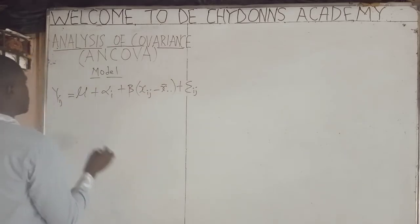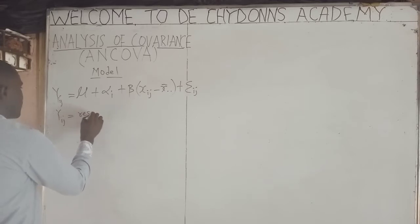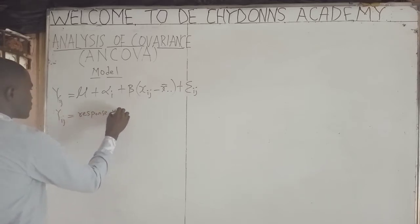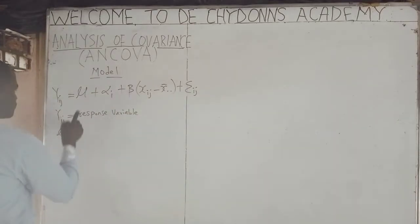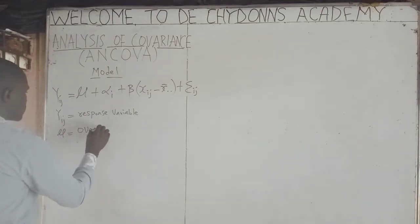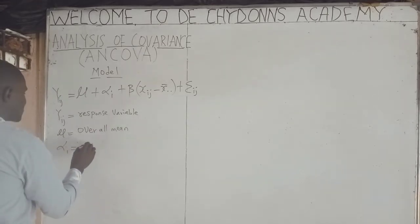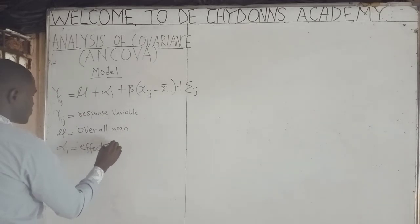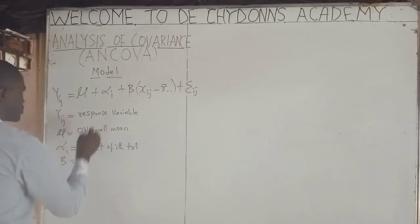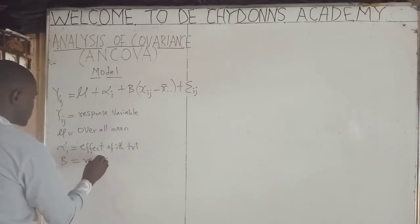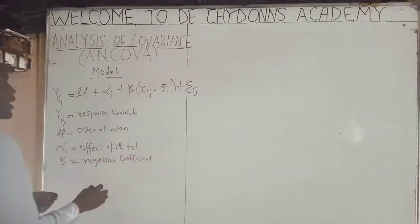In this model, Y-I-J is called the response variable. The overall mean symbol is called the overall mean. The effect of the i-th treatment term is called the effect of i treatment. The regression coefficient symbol is called the regression coefficient.